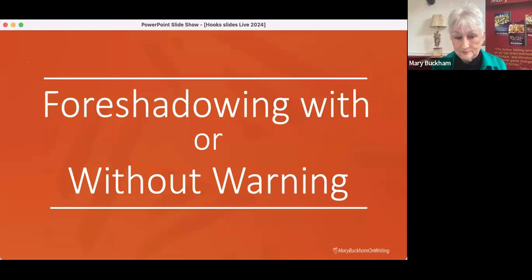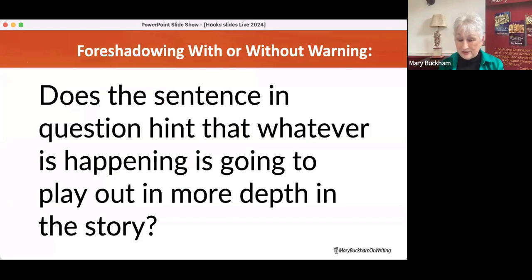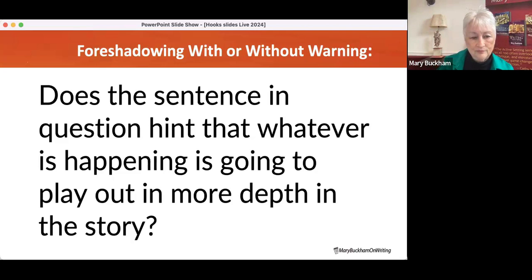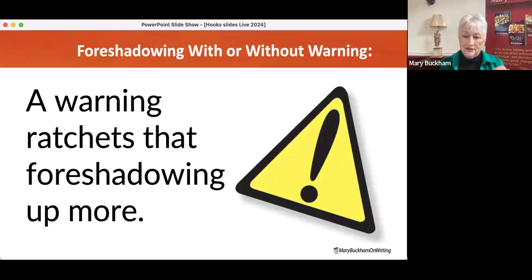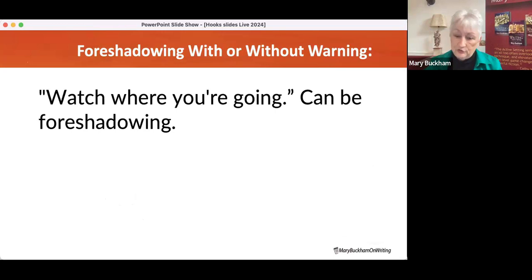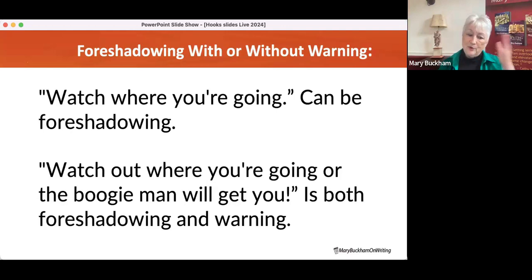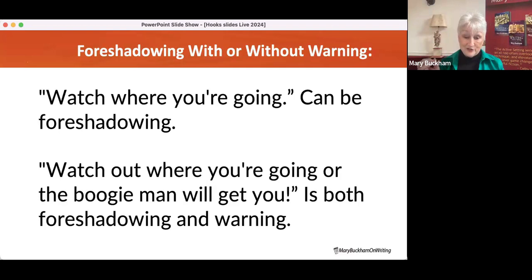Foreshadowing with or without warning. Ask yourself: does the sentence hint that whatever is happening is going to play out in more depth in the story — even if it's not the main through line? A warning ratchets that foreshadowing up a little bit more. 'Watch where you're going' can be foreshadowing — we know something possible could happen. 'Watch out, the boogeyman will get you' is both foreshadowing and warning. It's also one of the few Indonesian words in the English language — the boogeyman was based on the pirates of the Southeast Asian seas.